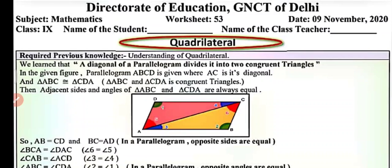Hello everyone, welcome back to my YouTube channel NCRT Math Sub. Today in this video we will do worksheet number 53 for class 9 subject mathematics. Today our topic is quadrilateral, and we all know that there are many forms of quadrilateral such as square, rectangle, parallelogram, trapezium, rhombus, and kite, and many other forms of quadrilateral are there.